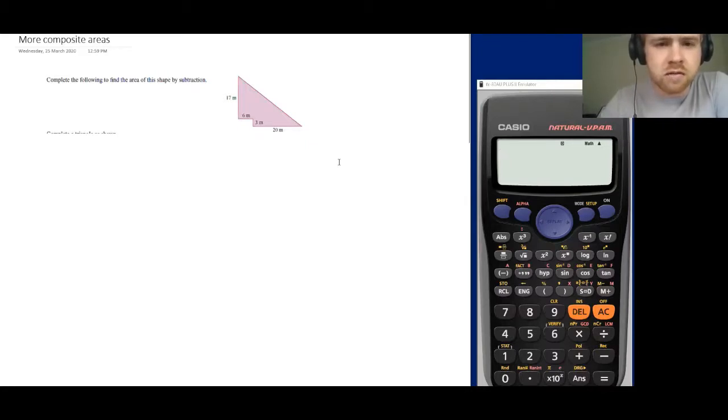Here's our first question. We've got this funny looking shape, sort of like a triangle, sort of not. We want to complete the following to find the area of the shape by subtraction. This particular question tells us the method we're going to use. I can see this is kind of like a big triangle, except we've taken away a little rectangle.